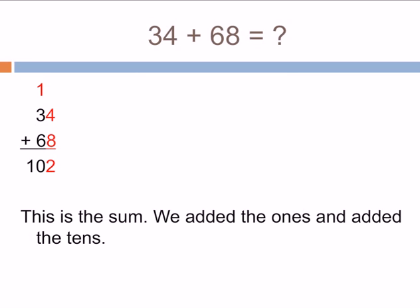How would we normally do that? We'd add the ones: 4 plus 8 is 12. 2 would be the ones, and we'd give an extra 1 to the tens count. 3 plus 6 is 9, plus 1 more is 10. So our answer is 102.